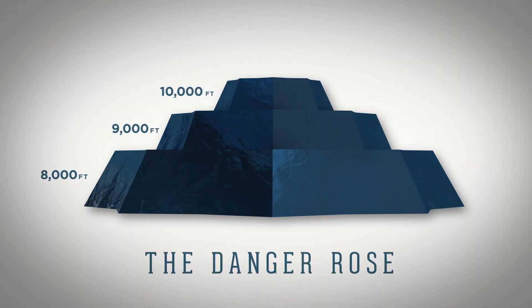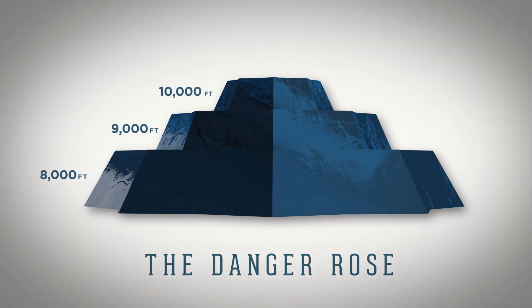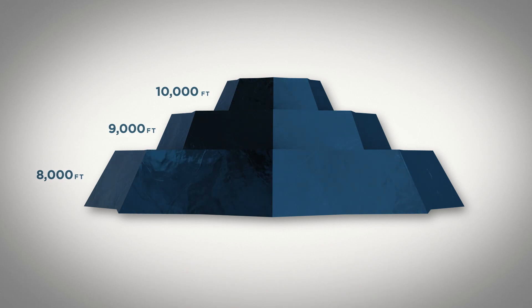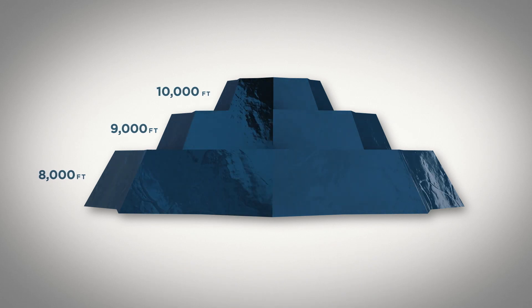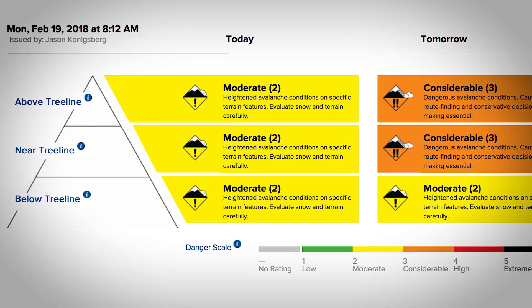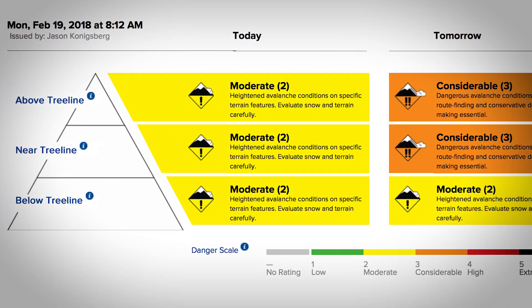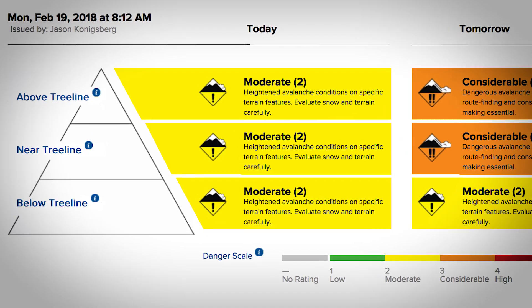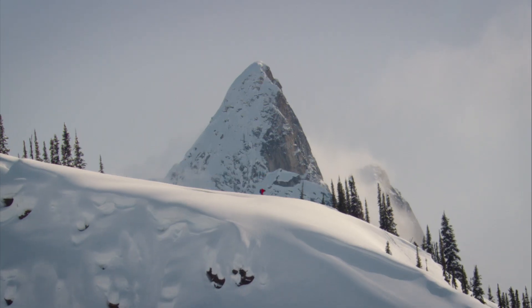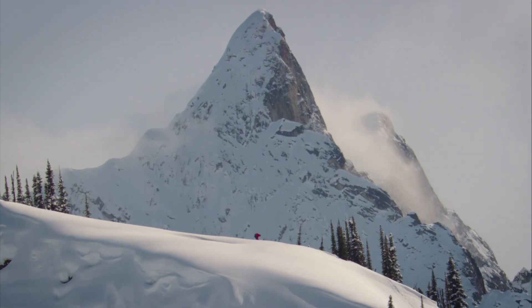You might be intimidated the first time you see a danger rose, but it's actually pretty simple. First, picture a profile of the mountains — each tier represents a different elevation in the backcountry. Many avalanche centers use this 2D model to help us understand how the danger can increase or decrease depending on where you're at in the mountains.